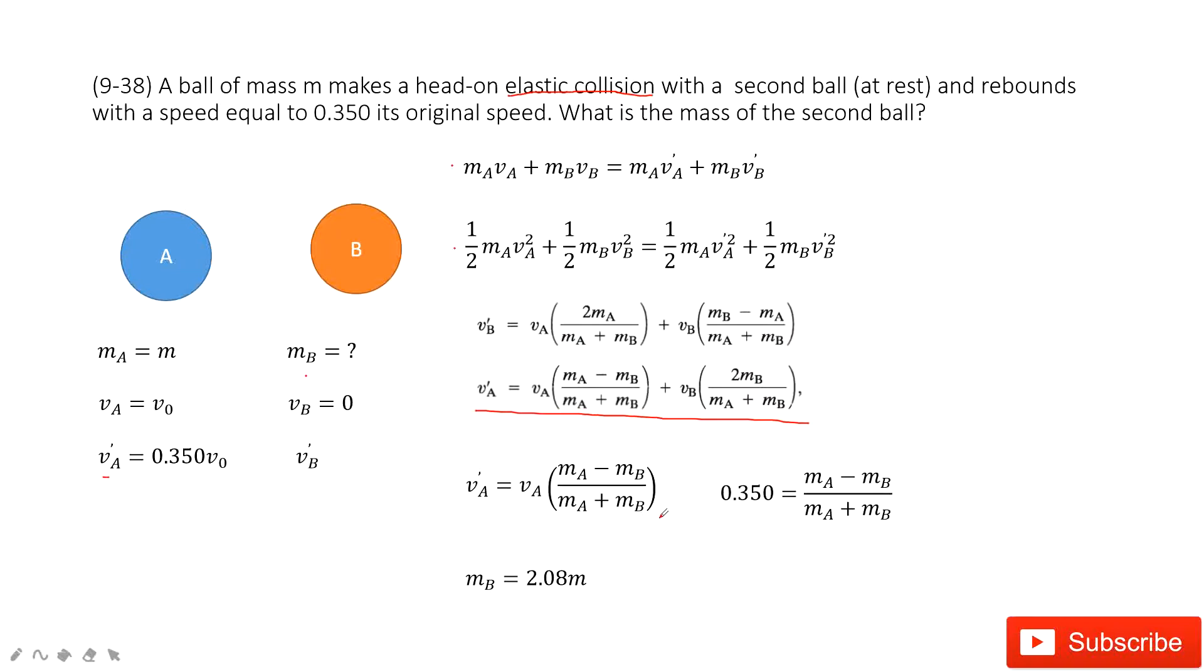And then V_A and V_A plus is given. The mass A is given. So the equation becomes this one. You can solve the equation to get the mass B. It is 2.08 times M. Thank you.